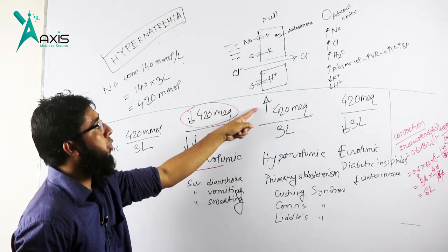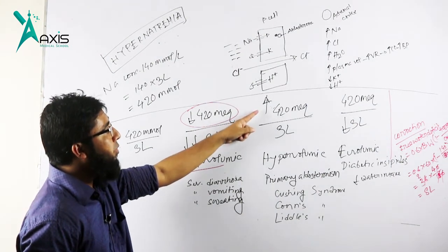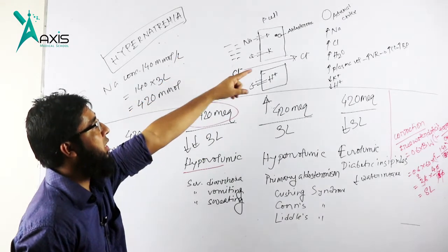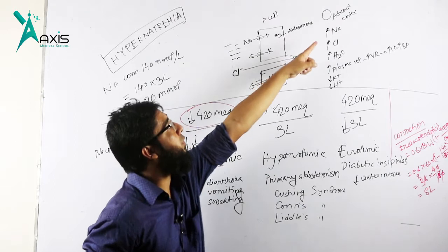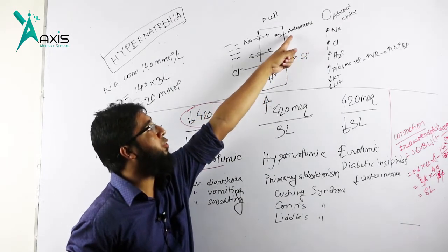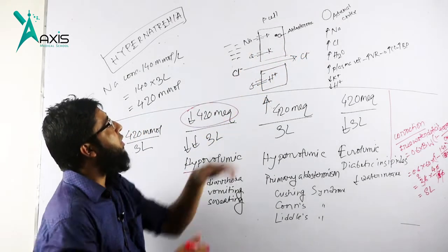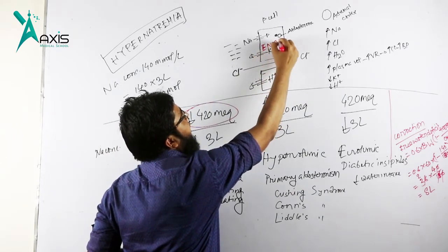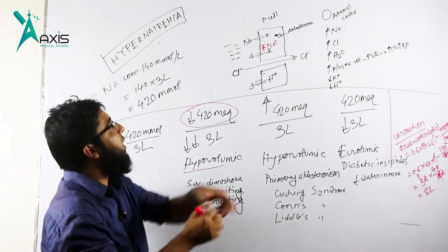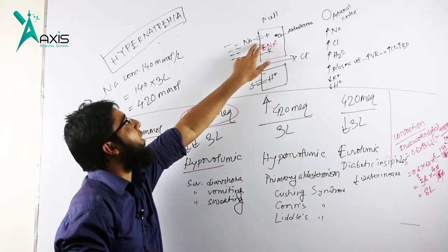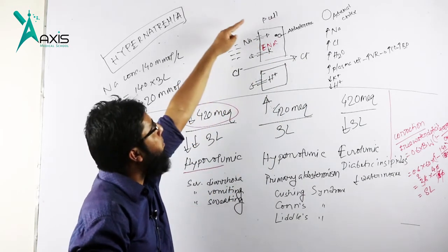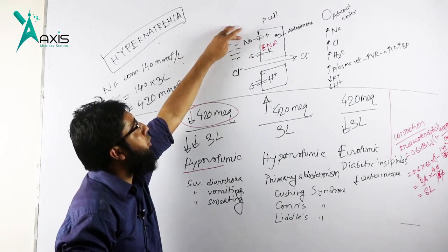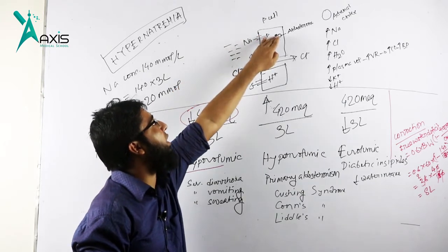How does sodium volume increase? We know the renin angiotensin aldosterone mechanism. Adrenal cortex synthesizes aldosterone, which synthesizes epithelial sodium channel.